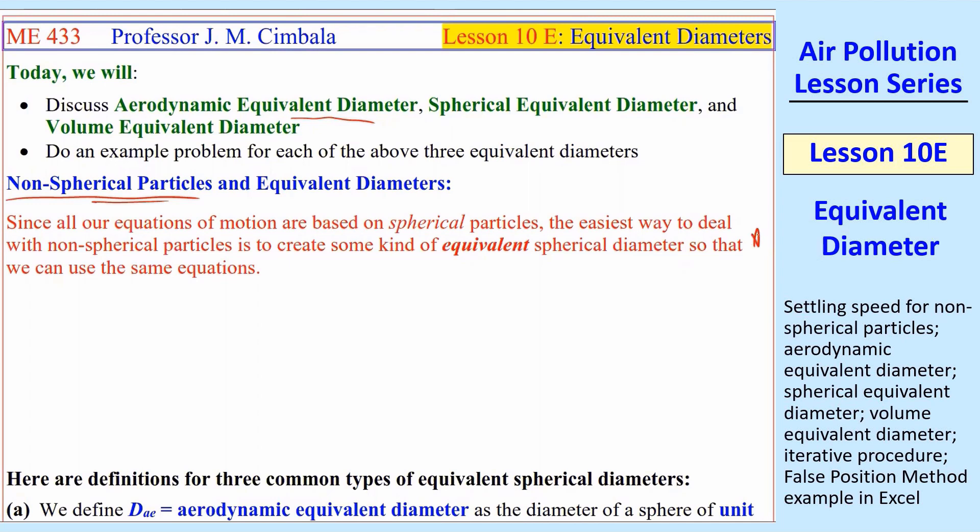The reason we're doing this is because all of our equations of motion are based on spherical particles, so rather than come up with new equations for different shapes, we just come up with some equivalent spherical diameter so that we can use the same equations. This is very similar to what we do in fluid mechanics with pipe flows, when we create a hydraulic diameter to replace the real diameter. Once you have a hydraulic diameter, you just pretend that's a round pipe and use all the same equations.